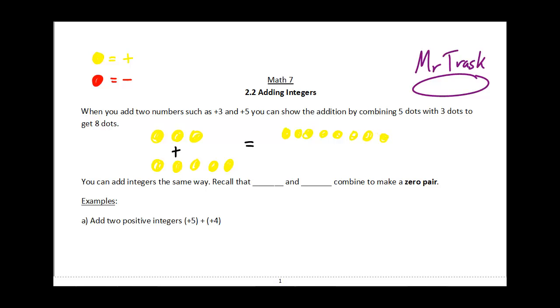Now this is pretty straightforward. I know that you all know that 3 plus 5 is 8, but we can do the same thing with positives and negatives when we combine them together. Just remember that a positive dot and a negative dot will combine to make a zero pair. So a plus and a minus will combine together to make zero.